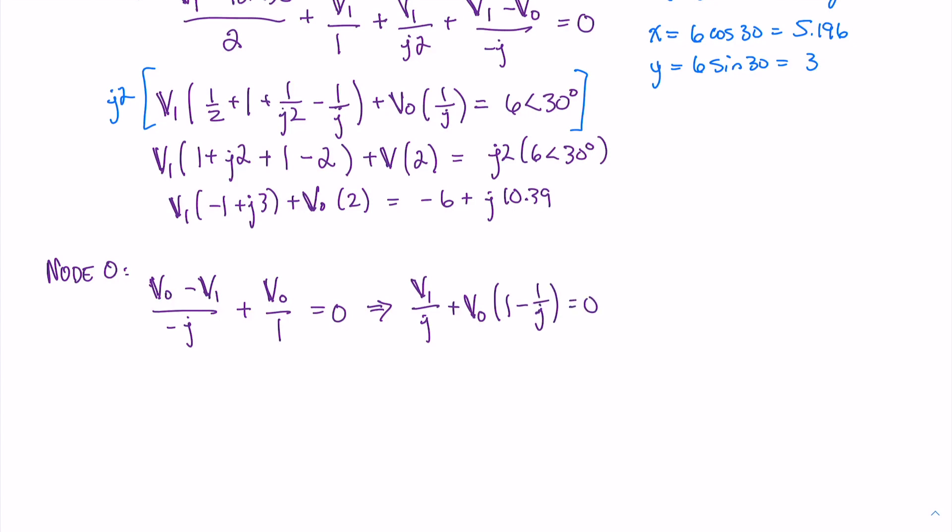Combining terms, we get V1 divided by J plus V0 times (1 minus 1 over J) equals 0. If we multiply both sides by J and then isolate V1, we get V1 equals Vout times (1 minus J). Now we substitute this value for V1 into our previous equation, and we'll have an equation that solely has V0 as our variable, which we can isolate and solve for.